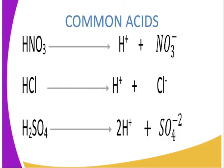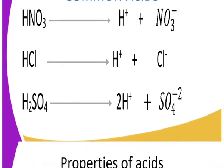What are some of the common acids that we have? Firstly, we have hydrogen nitrate, referred to as nitric acid — it dissociates to give us hydrogen ions and nitrate ions. Hydrogen chloride is another type of acid that dissociates to give us hydrogen ions and chloride ions. We also have hydrogen sulfate, known as sulfuric acid, which dissociates to give us two hydrogen ions and sulfate ions.